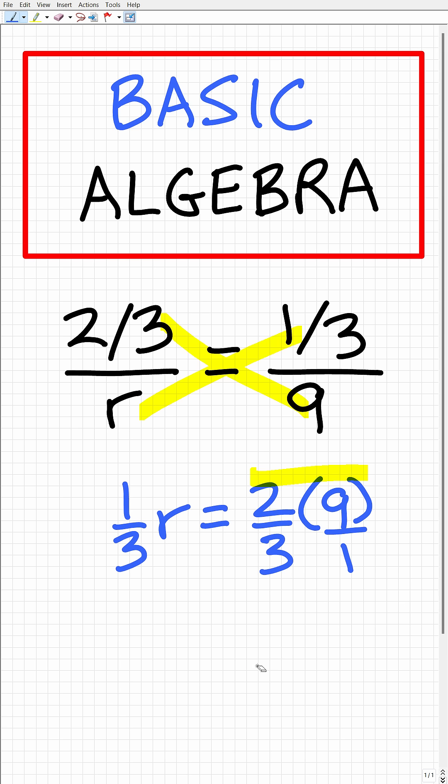So on this side of the equation, we will have a 6. And then on this side of the equation, we still have our one-third r.